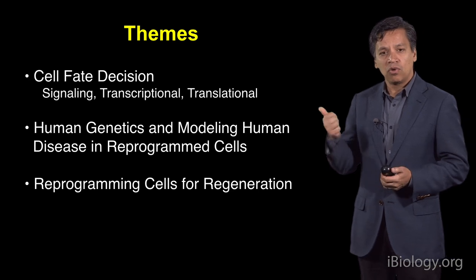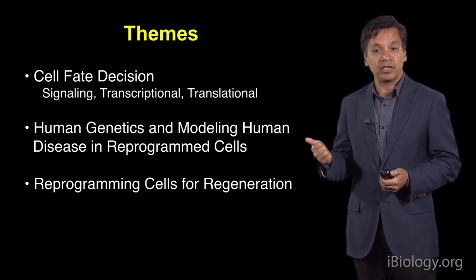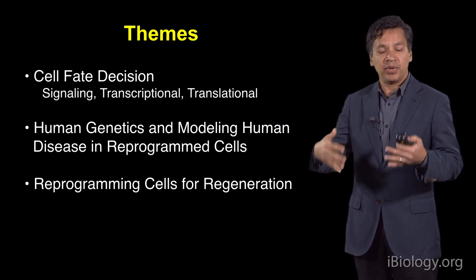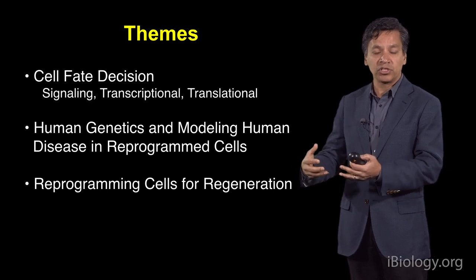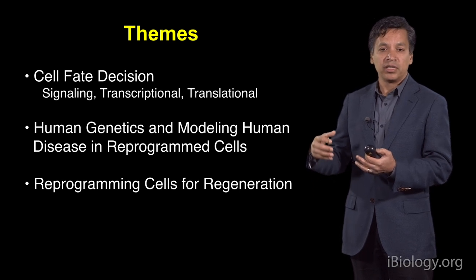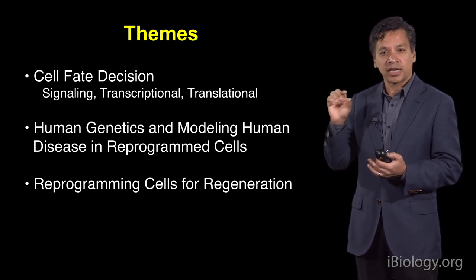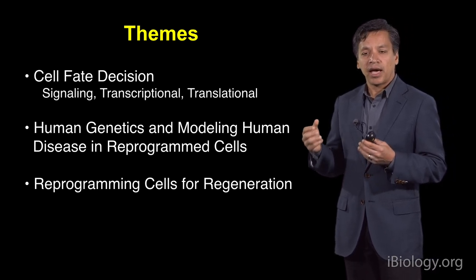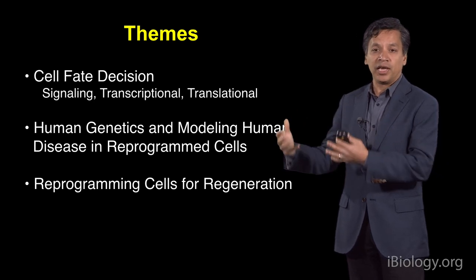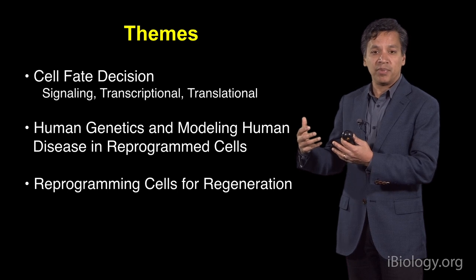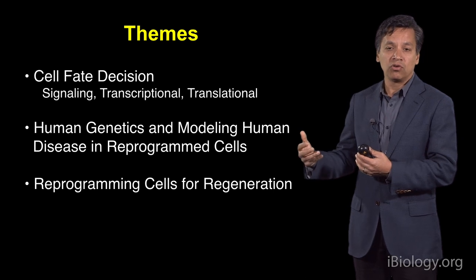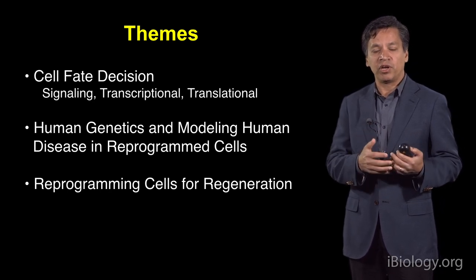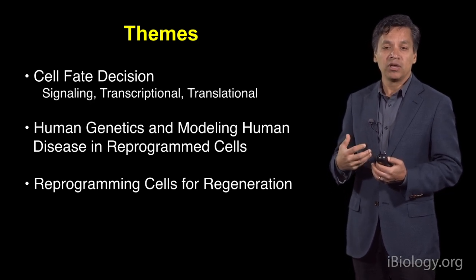The themes of what I'll share with you today are: first, to understand how early cardiac cell fate decisions are made in the embryo as it's first forming — involving signaling pathways, transcriptional networks that establish these various cell fates, and even translational networks using microRNAs that titrate the right dose of these networks to exert the proper outcome. Second, how we can utilize the knowledge of these networks overlaid on human genetic models to understand the basis of human disease — including the mechanisms using induced pluripotent stem cells in a dish. Finally, how we can use these developmental biology networks to reprogram cells in situ in an organ for regenerative medicine.